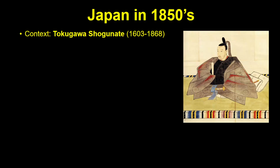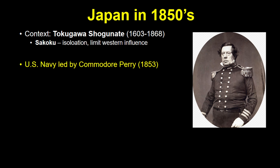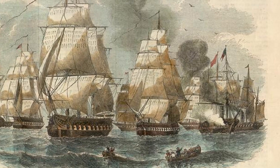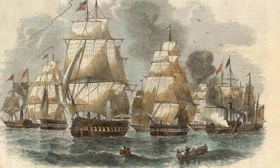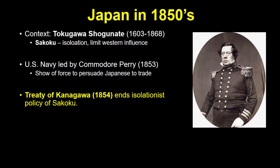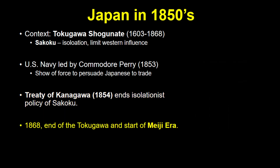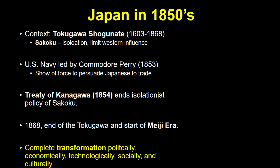The most successful state-sponsored industrialization effort occurred in Japan. Last we checked on Japan, they were under the Tokugawa shogunate, whose policy of Sakoku attempted to restrict Western influence. But in the 1850s, the United States sent their navy to persuade the Japanese to open up trade relations. It was obvious that the Tokugawa navy would be no match for the American ships, and this caused something of a crisis in Japanese society. They were forced to sign the Treaty of Kanagawa in 1854, allowing trade with the U.S. and ending the period of isolationism. The crisis led to the end of the Tokugawa shogunate and the beginning of the Meiji era in 1868. This was a complete transformation of Japan — politically, economically, technologically, socially, and culturally.